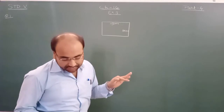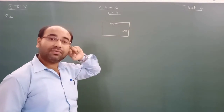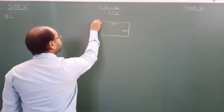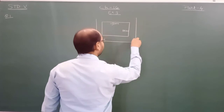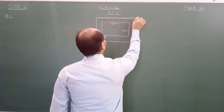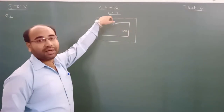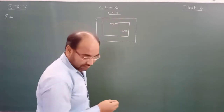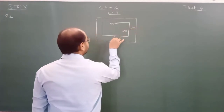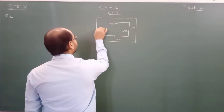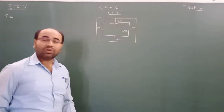The question says there is a 10 meter path around the field. We have to make a path around it. So this much is also 10 meter, here also it is 10 meter, here also 10 meter, and here also it will be 10 meter.